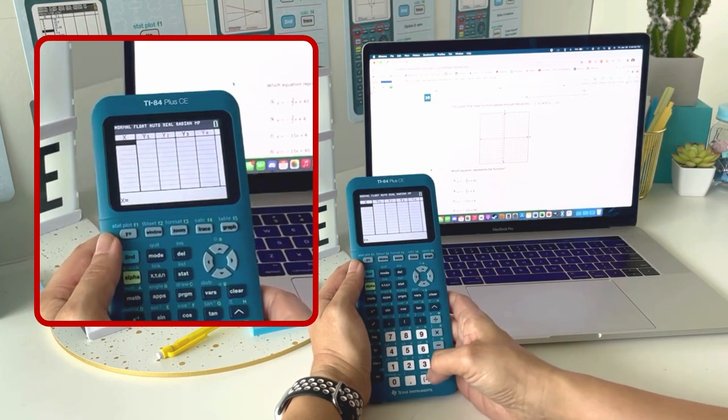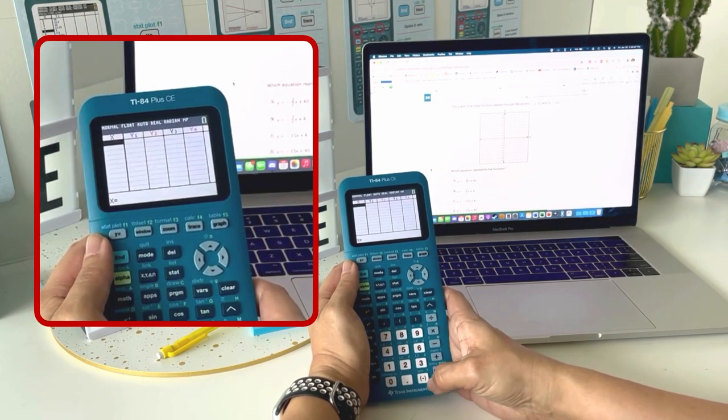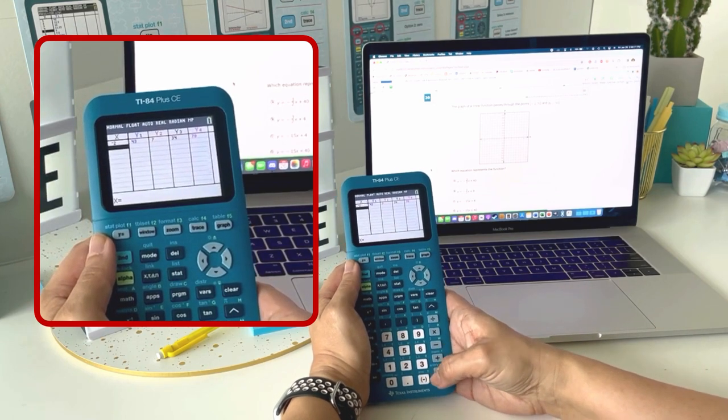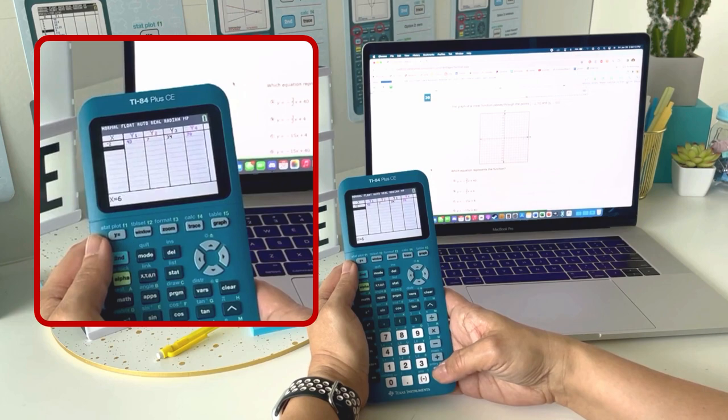Now I'm going to go to my table and enter the first X coordinate they give me, which is negative 2, and hit enter. Then I'm going to type the second X coordinate they give me, which is 6, and hit enter.